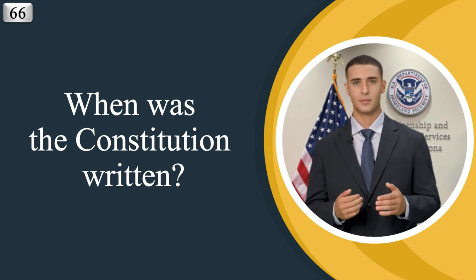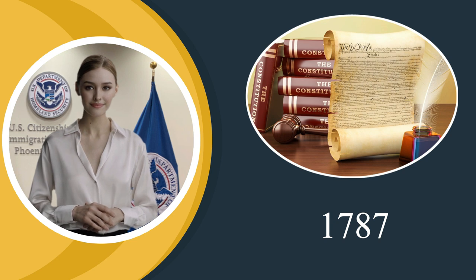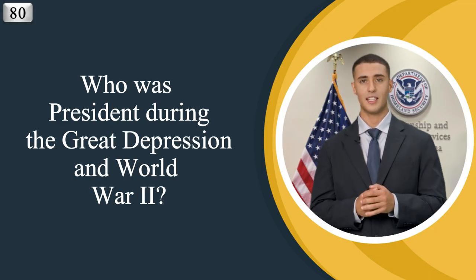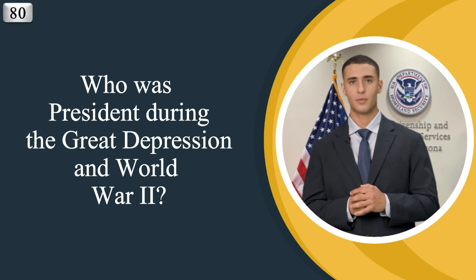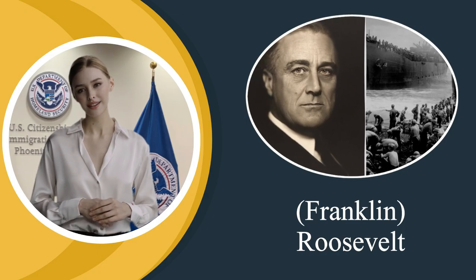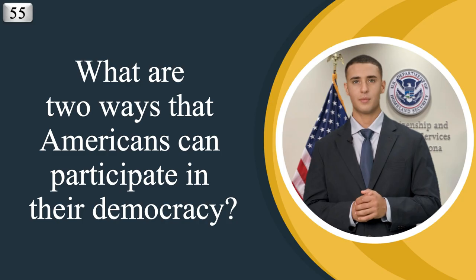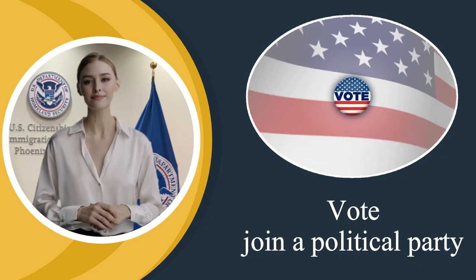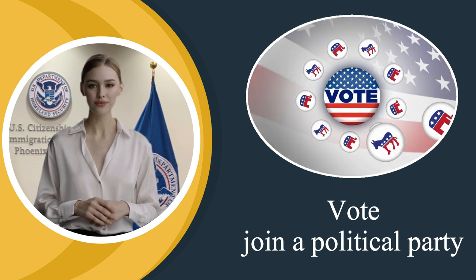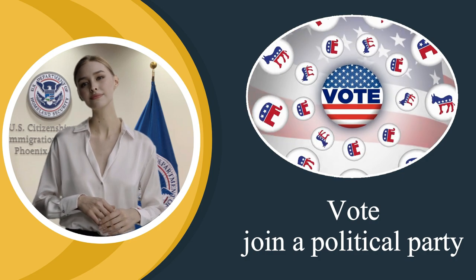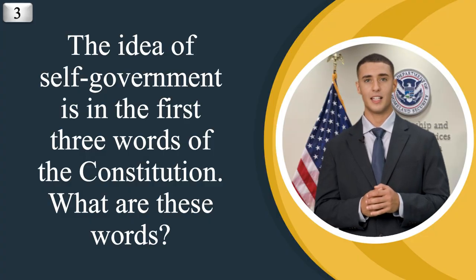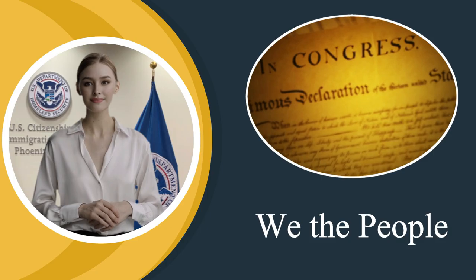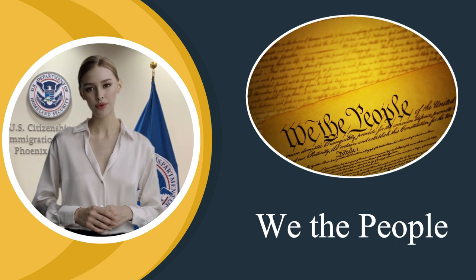When was the Constitution written? 1787. Who was President during the Great Depression and World War II? Franklin Roosevelt. What are two ways that Americans can participate in their democracy? Vote. Join a political party. The idea of self-government is in the first three words of the Constitution — what are these words? We the people.